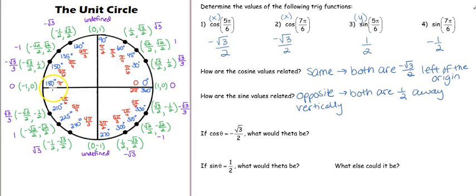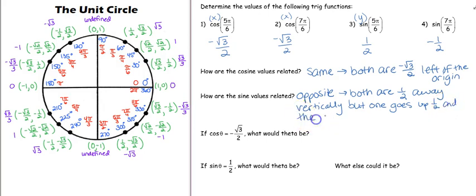At 5π/6 from the x-axis we're going up one half, making it a positive 1/2. For 7π/6 we're going down one half, which gives it a negative 1/2. They both are moving one half away from the origin vertically, but one goes up — making it positive — and the other goes down — making it negative. So those ordered pairs are all talking about what direction and how far you're going.